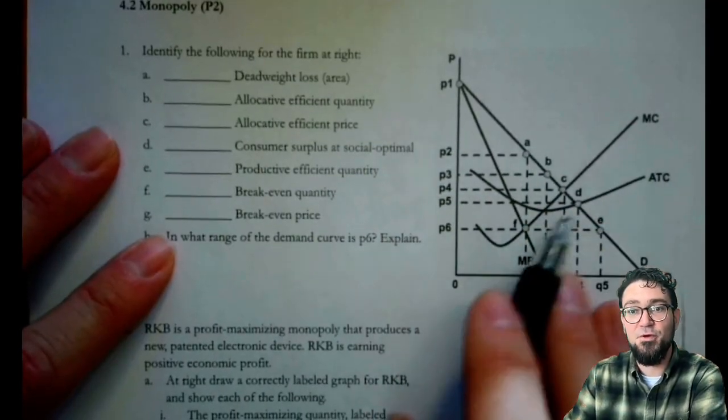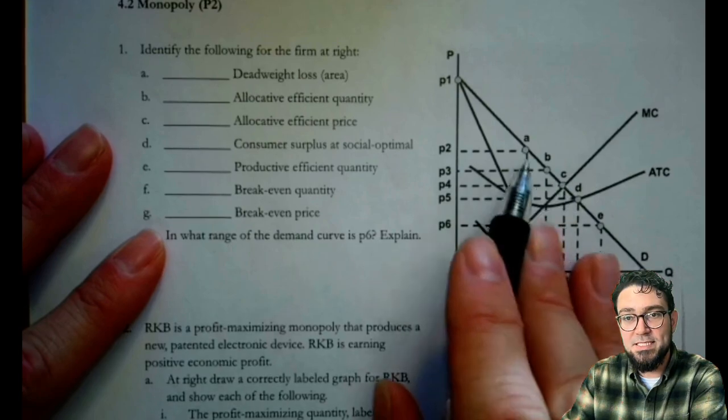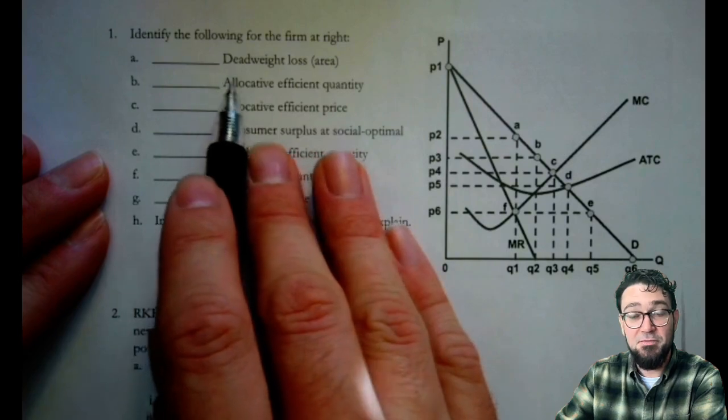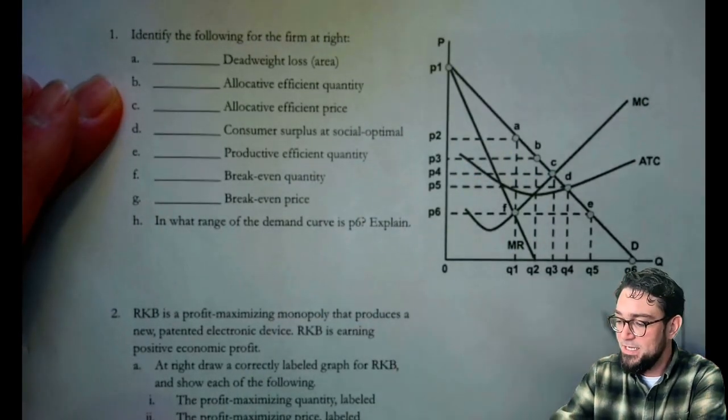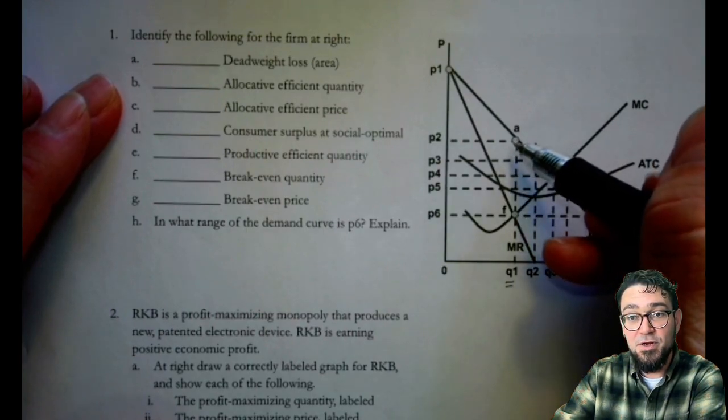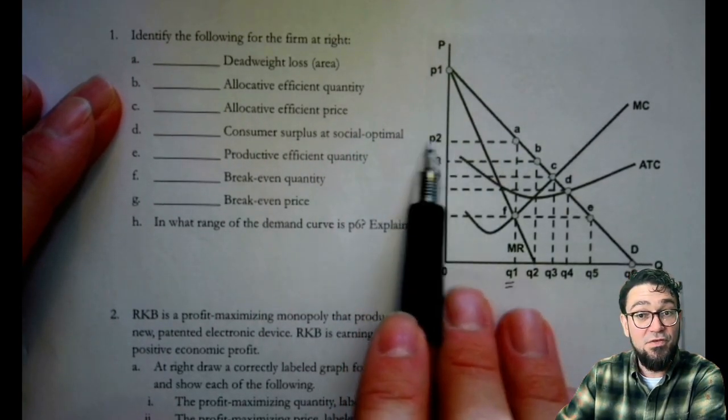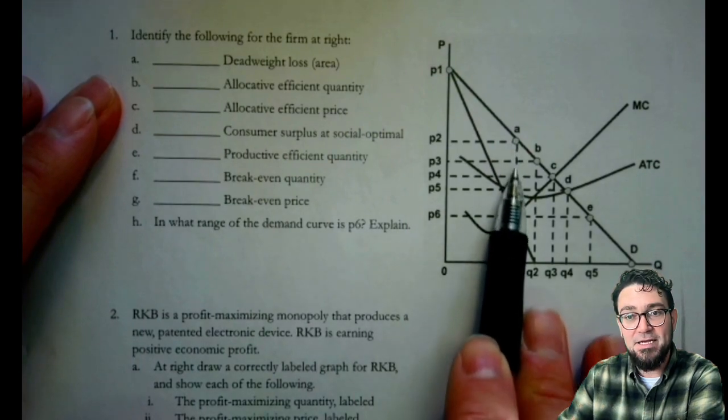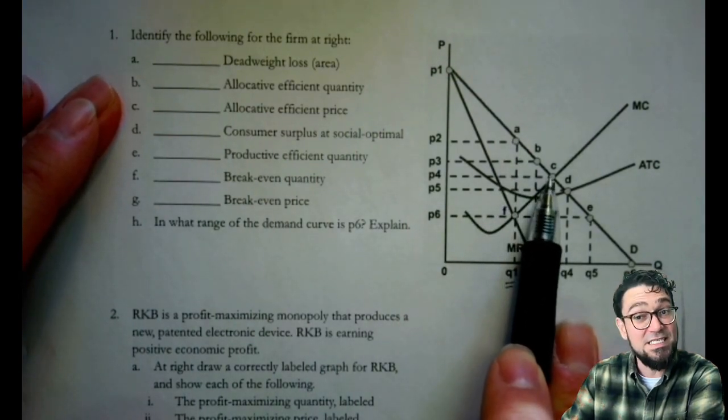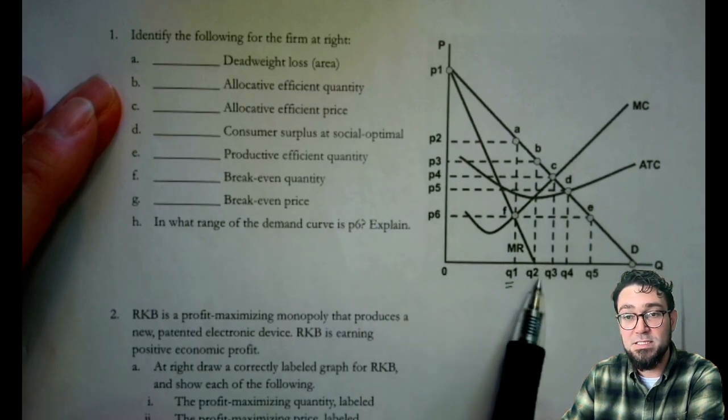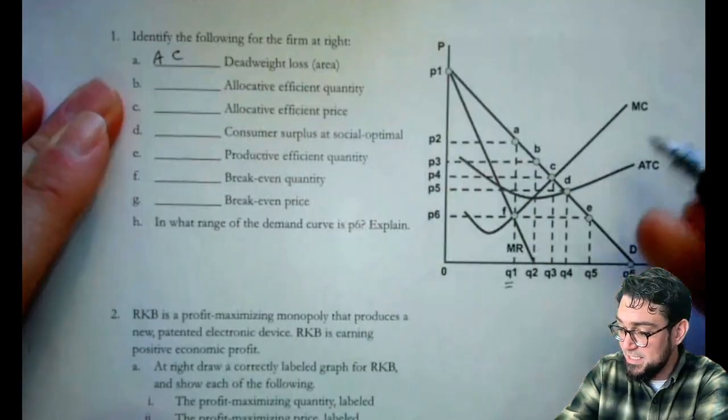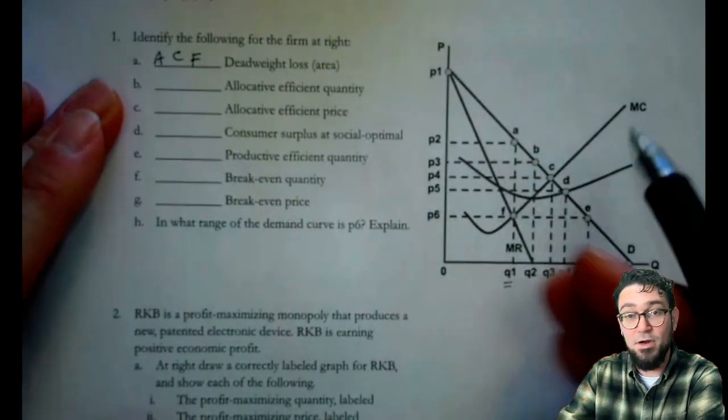This first section says identify the following for the firm at right. We're going to use the letters to refer to points on the graph. For the first part, it says deadweight loss, what's the area of that? I know the firm is producing Q1 because that's where MR is equal to MC at point F. And I know that they're going to price up here at point A or P2, the price. So this is the back of that deadweight loss. And it's going to come up along that marginal cost curve over to point C where the socially optimal quantity is occurring, corresponding to Q3 and back up again. So that's going to be A, C, and then F is the area for our deadweight loss.